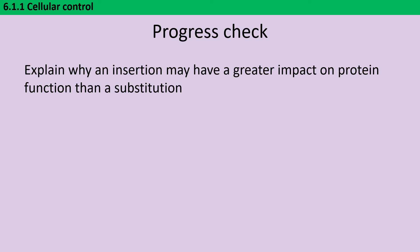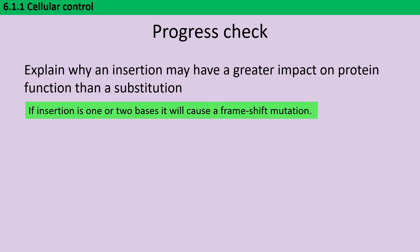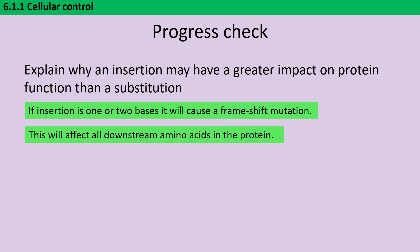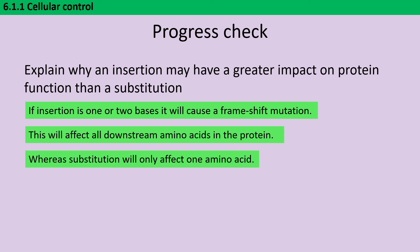An insertion is likely to have a greater impact on protein function than a substitution mutation because an insertion is likely to cause a frameshift mutation if the number of bases added isn't divisible by three. This means that all downstream amino acids after that point will be affected, greatly increasing the likelihood that an amino acid vital to protein function will be changed. In contrast, a substitution is only going to affect one amino acid, and it may not even affect that amino acid because the mutation could be silent.